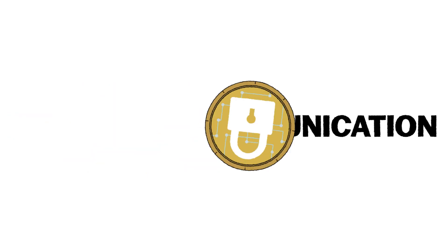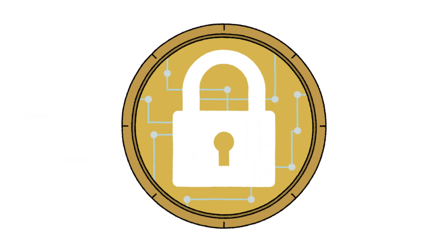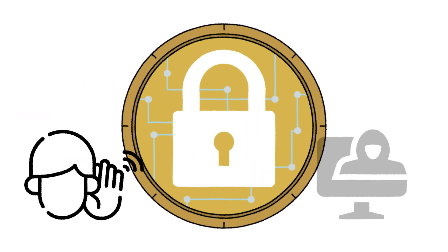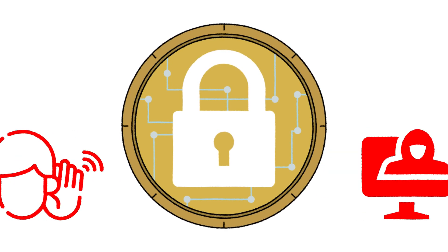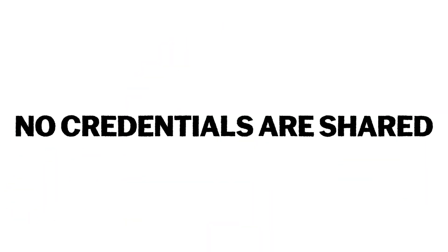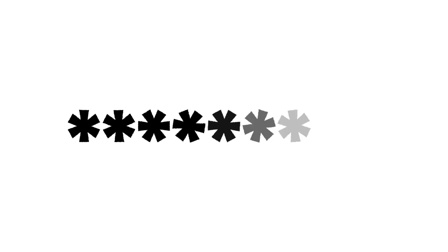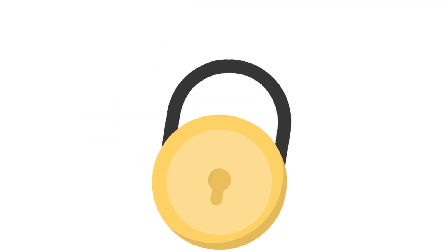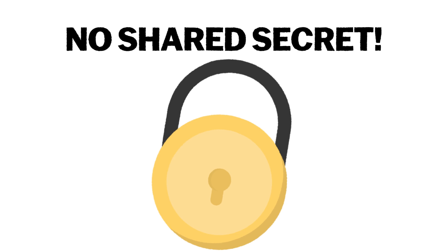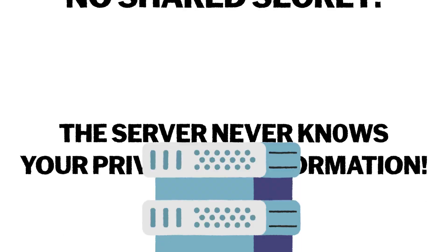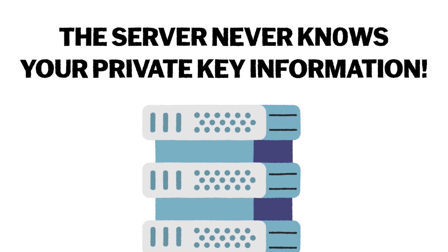Third, encrypted communication: all communication happens inside the TLS tunnel, where data is encrypted, protecting it from eavesdropping and tampering. Fourth, no credentials are shared. If you notice, the user never sends a password or anything like that. The magic of certificate-based authentication is that with cryptography, you don't have to share your secret with the other party to authenticate yourself, meaning the server never knows your private key information.